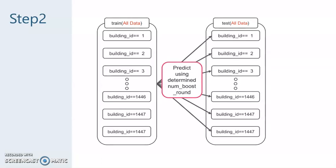In step 2, we make a model using all data in train and predict using numboost round determined in step 1.